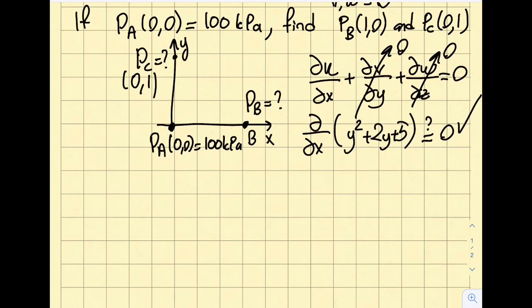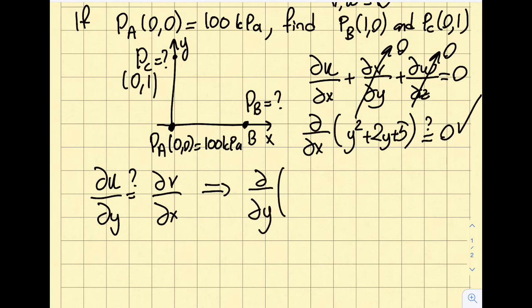So for 2D flow, actually this is 1D, but for 2D, this is going to be what we have, del u del y, is it really equal to del v del x? So let's establish that, del of del y of y squared plus 2y plus 5, is it really equal to del del x of v, which is 0?